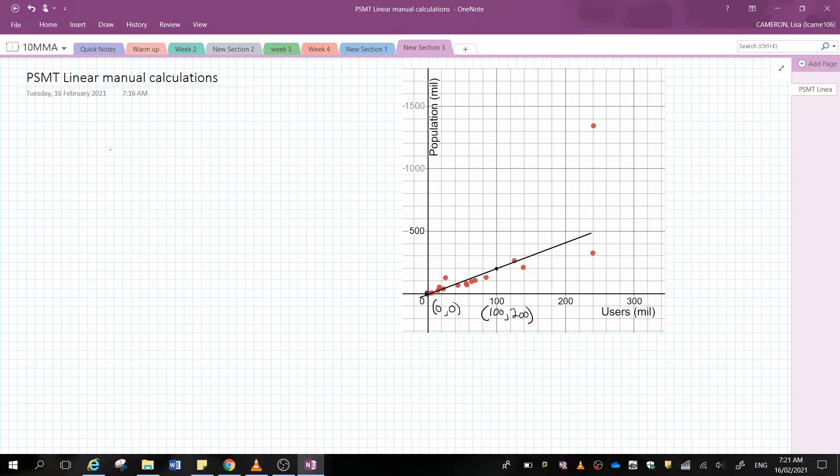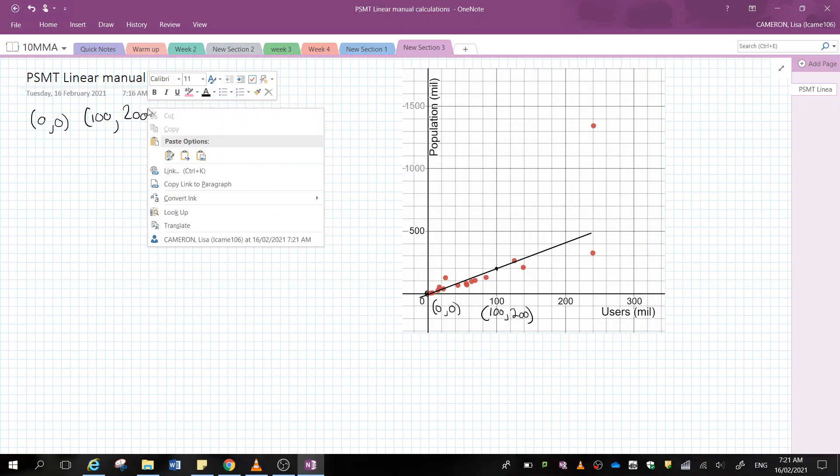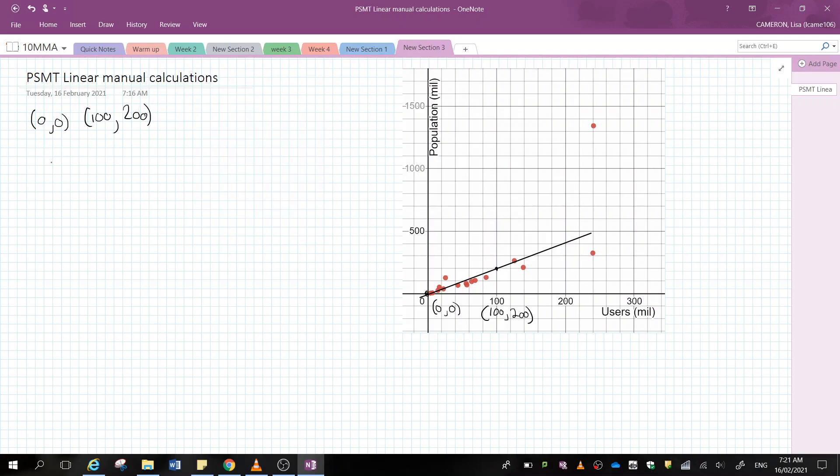Okay, so now I've got my two coordinates. When x is at zero, y is at zero, and when x is at 100 million users, y is at 200 million. So all I'm going to do is substitute into this equation to work out some values.